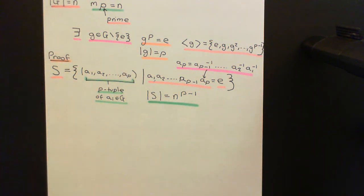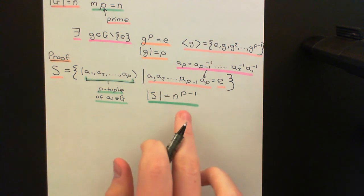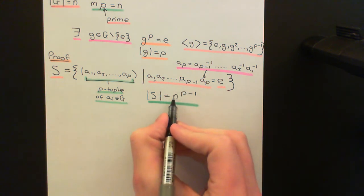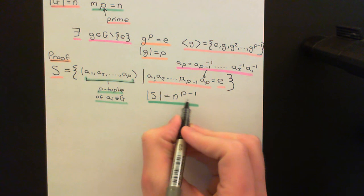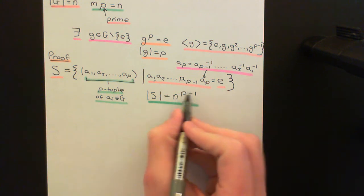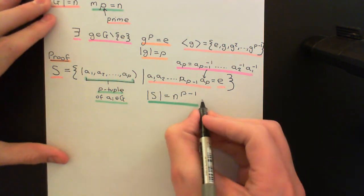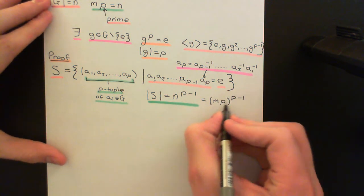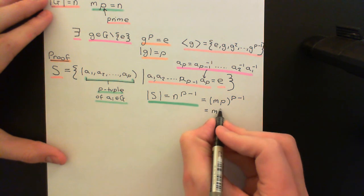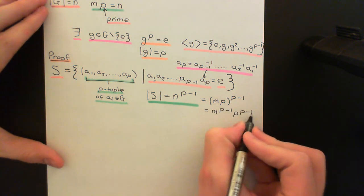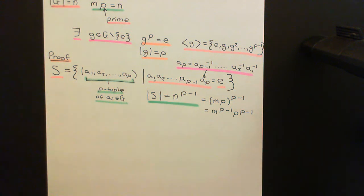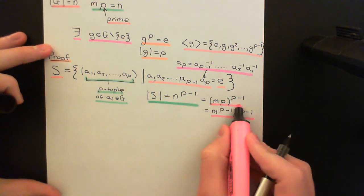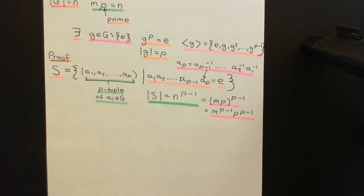The key thing to note is that n^(p-1) is a multiple of p, because n is a multiple of p. Substituting n = mp, we get (mp)^(p-1) = m^(p-1) · p^(p-1), which is evidently a multiple of p. So the size of the set S is a multiple of p — this is the important fact that will come into play later in the proof.